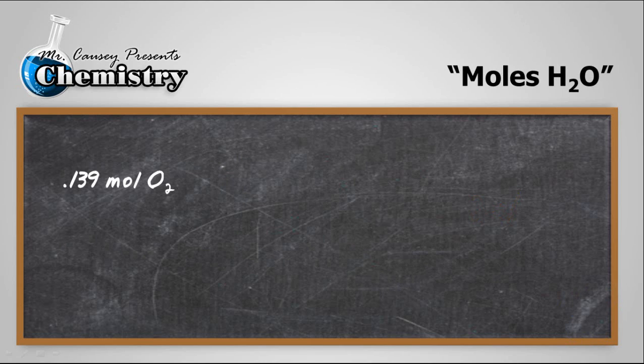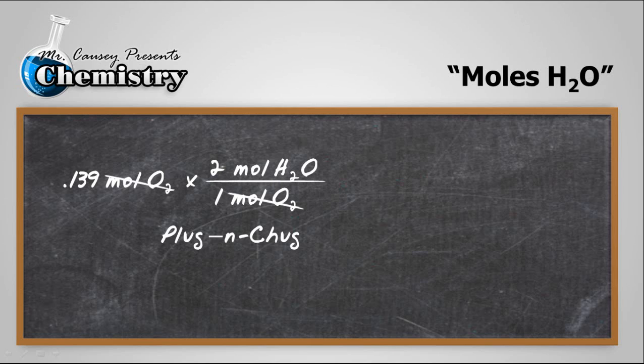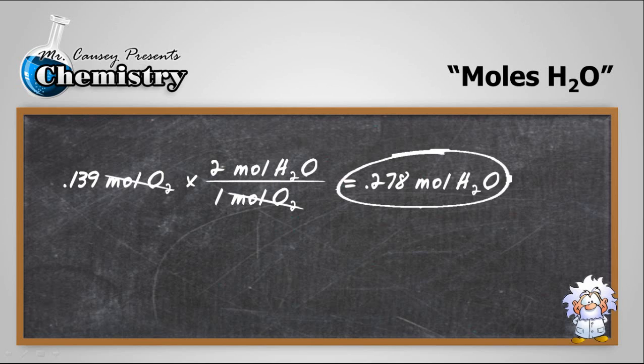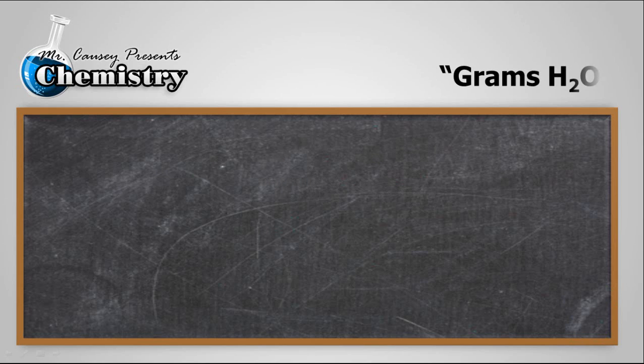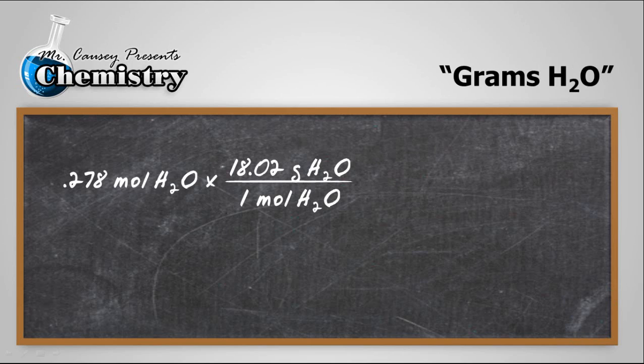Alright, moles of water. 0.139 moles of oxygen multiplied to the mole ratio between water and oxygen, cross out and plug and chug and we're going to get 0.278 moles of water. And so there's the moles of water that we'll have. Change the moles of water to grams of water and we do that by multiplying by the molar mass. Plug and chug and we get 5.01 grams of water and there's our final answer.